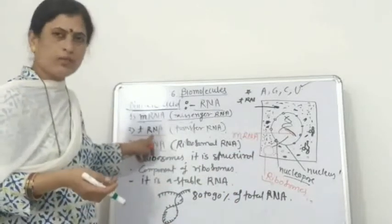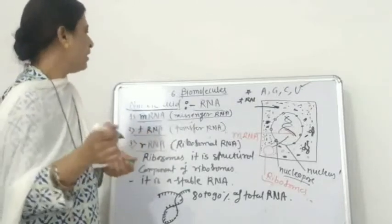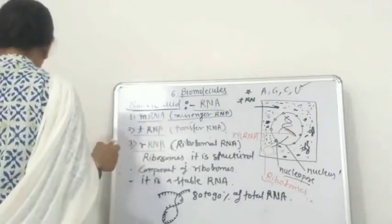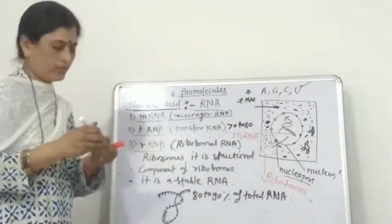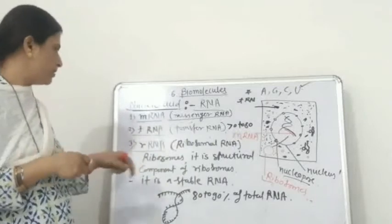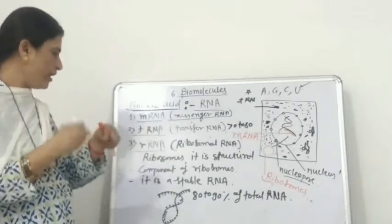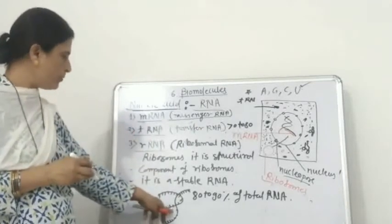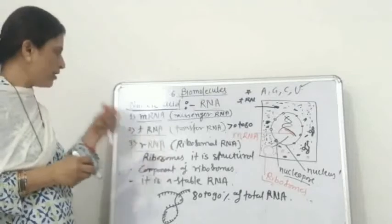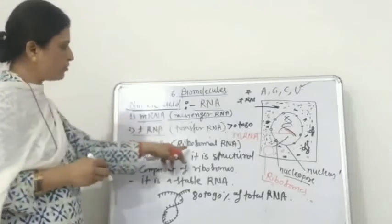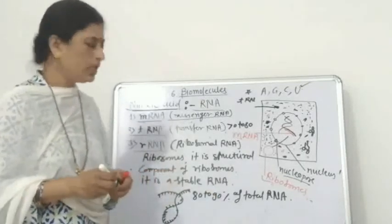tRNA is a more stable molecule and a very small molecule, because it contains only 70 to 80 nucleotides. rRNA is also single-stranded with folding. It is the structural component of the ribosome, present inside the ribosomes. It is stable RNA and forms 80 to 90 percent of the total RNA.